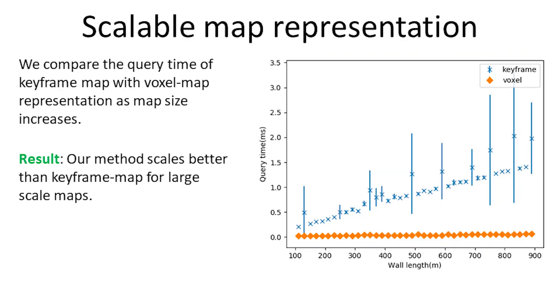We simulated a map consisting of straight wall and vary the map size by increasing the length of the wall. We compared the query time of keyframe map with ours as the map size increases. With an increase in the map size, the query time of the keyframe map increased almost linearly while ours remains constant. This makes our method particularly useful to manage map points at a large scale.